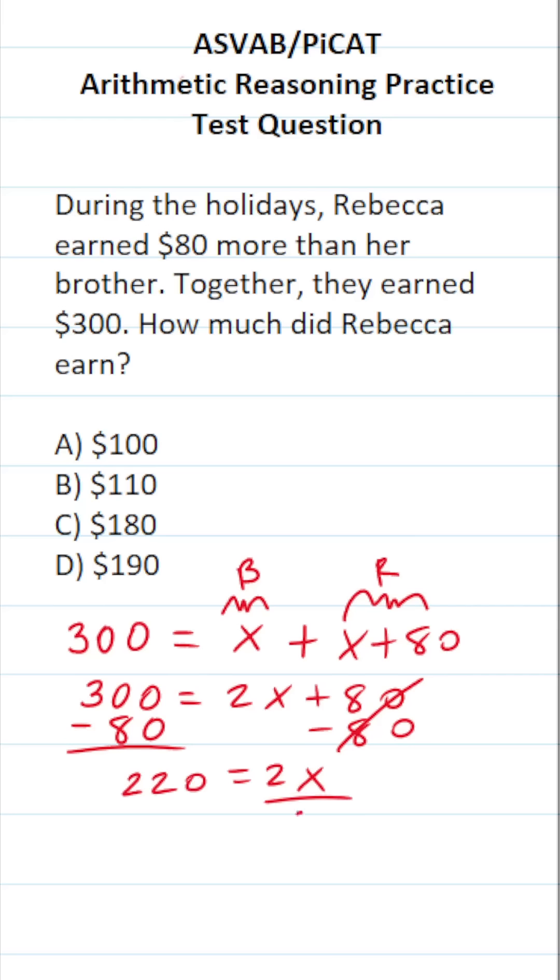To get X by itself, we're going to divide both sides of this equation by 2 now. This crosses out, leaving you with X over here. What is 22 divided by 2? Well, that's going to be 11. So 220 divided by 2 is going to be 110.